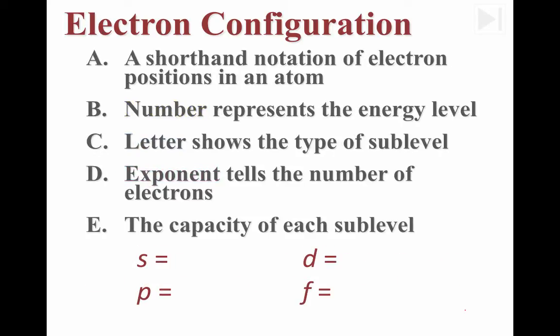Now, let's review the capacity for each sublevel. If we are writing in electrons in an s sublevel, the maximum number of electrons would be 2. However, if we are using a p sublevel, this can hold 6 electrons. How many electrons fit into a d sublevel? There are 10. And finally, the f sublevel holds 14.